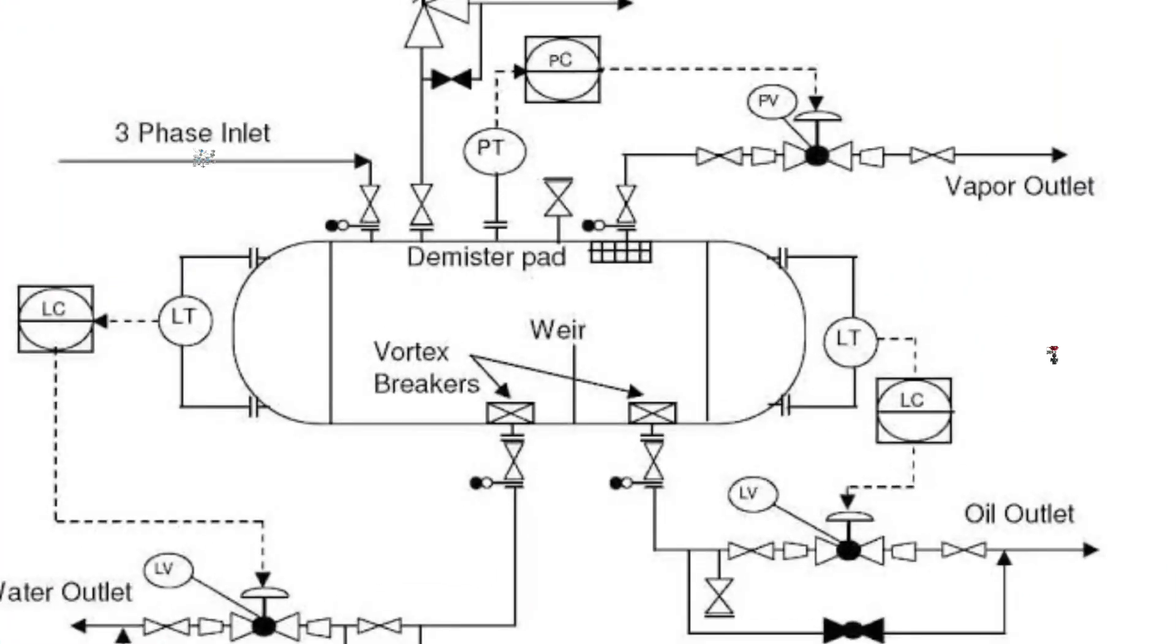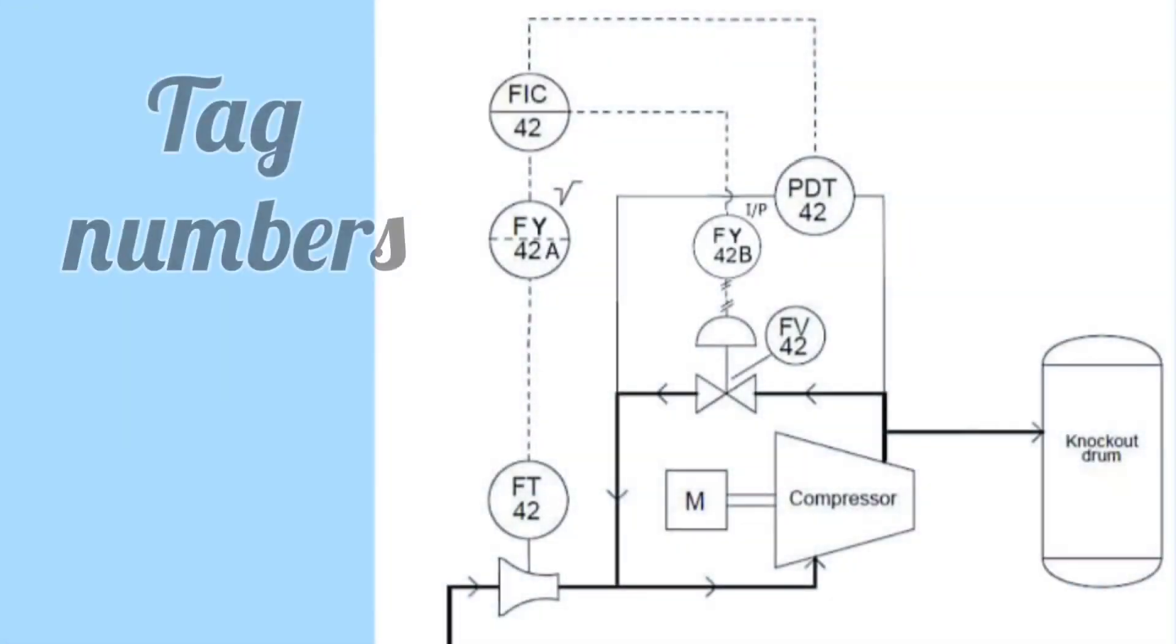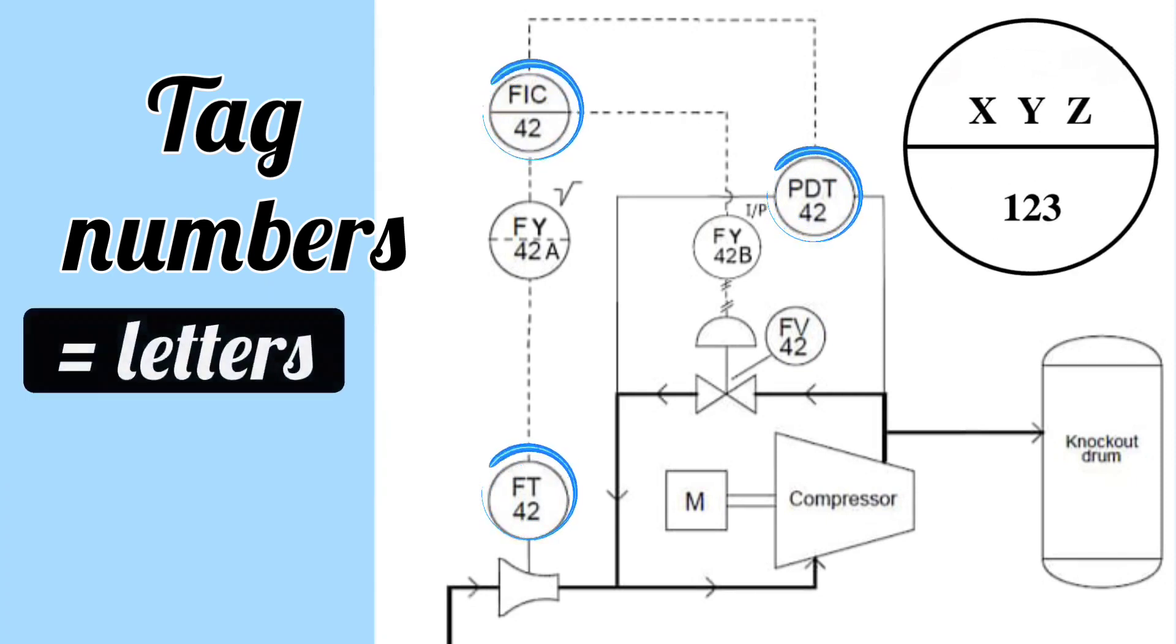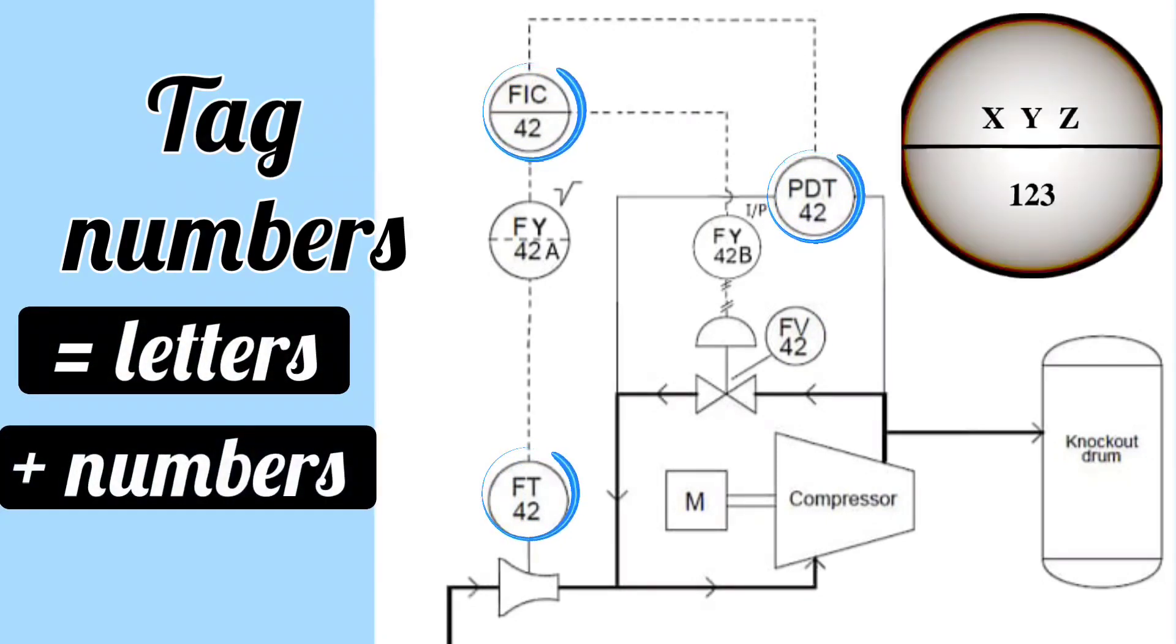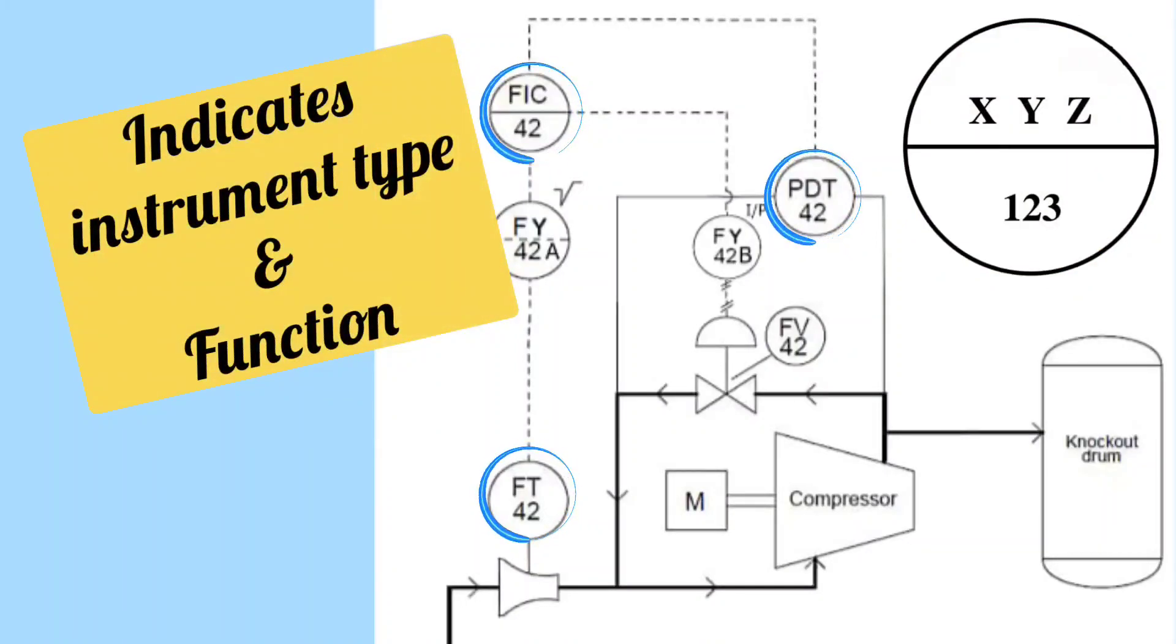P&ID also shows how these instruments are connected to each other. In P&ID, tag numbers are written. Tag numbers are a combination of letters and numbers. It indicates the type and function of the instrument.